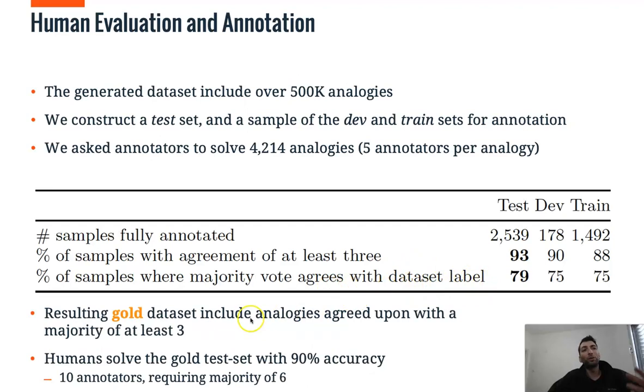And the resulting gold data set is the selections agreed upon the majority vote of the three annotators. And we also evaluate the gold standard test set with other 10 annotators who didn't participate in the data generation part. And we require a majority vote of six annotators. And we see that they solve VASR with over 90% accuracy.